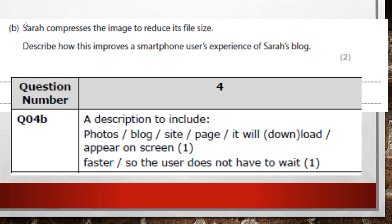The image will fit better on a smartphone screen and appear better. It's also faster because it's compressed and made smaller. With a bad connection, downloading a large image can take ages. Compressing it for smartphones and computers makes it appear on screen faster.